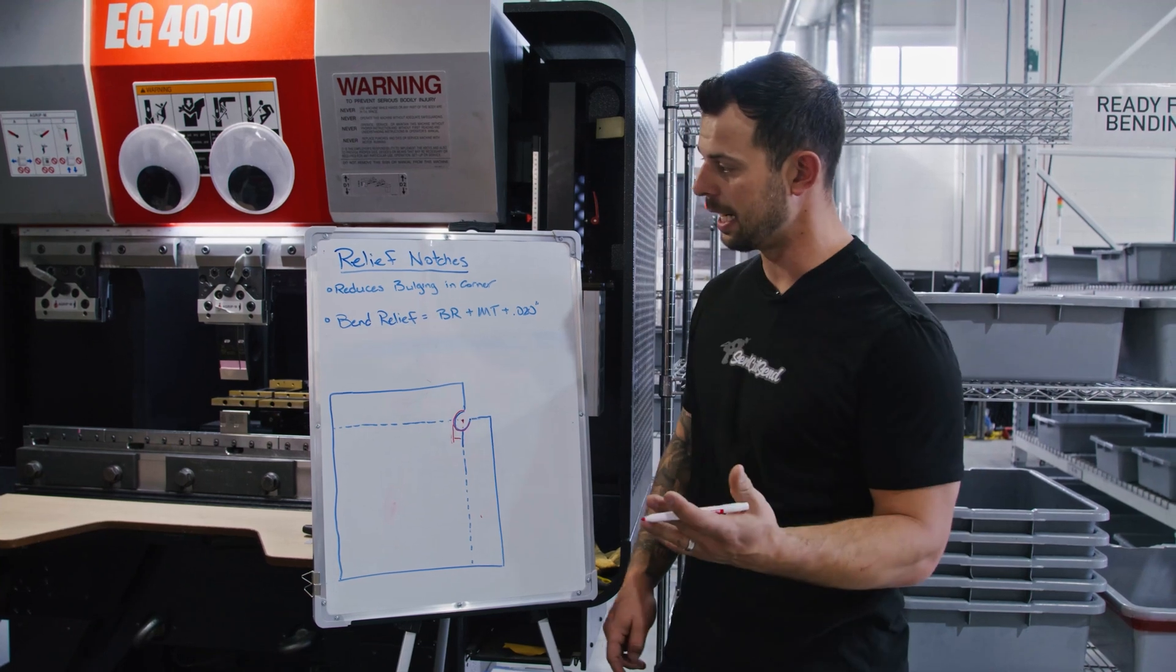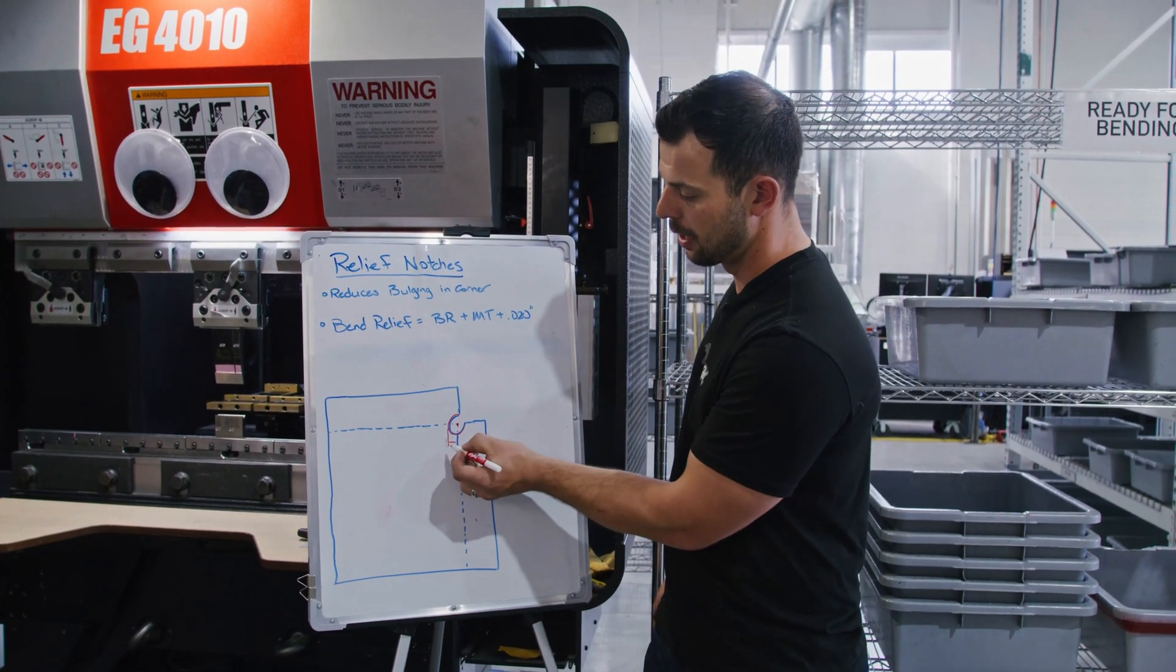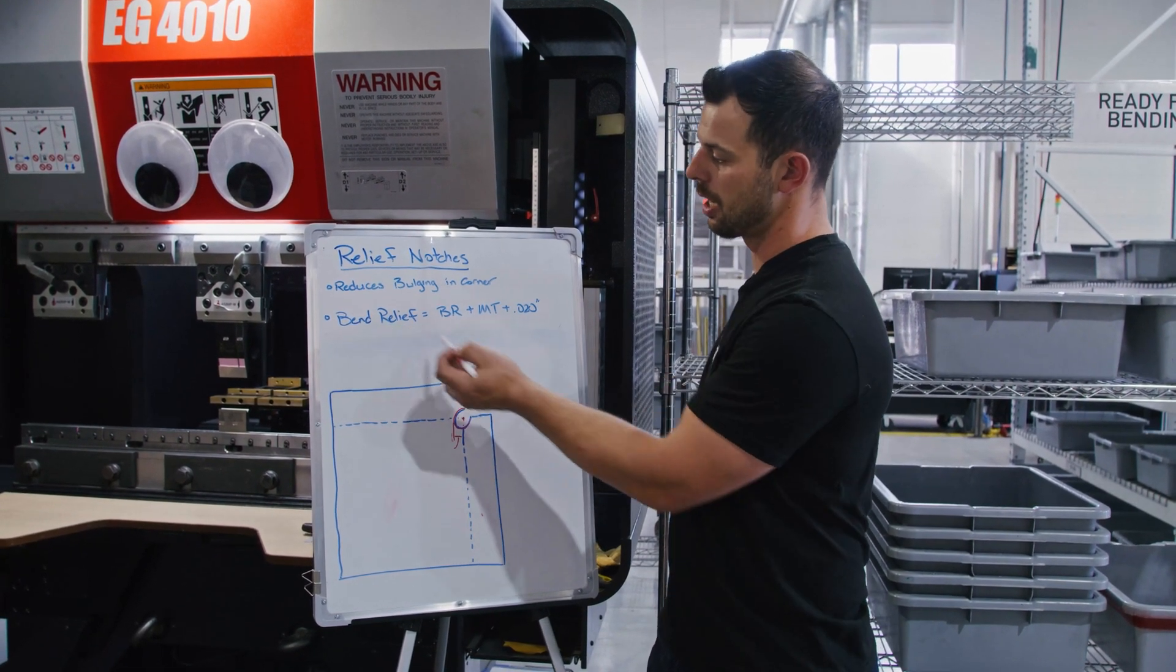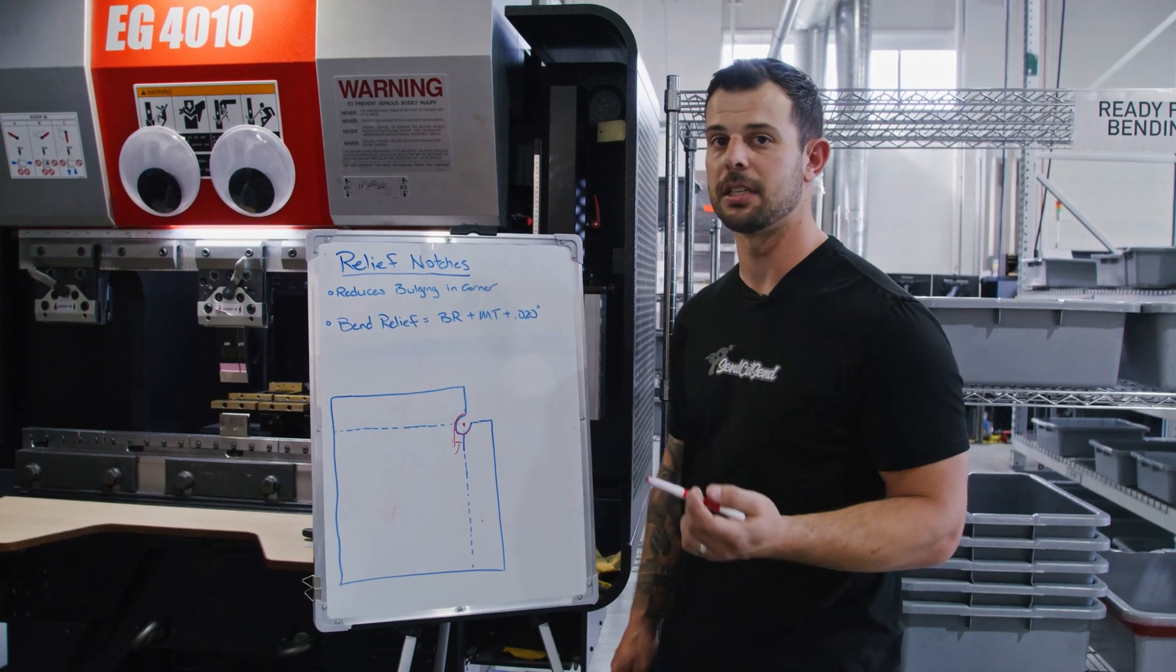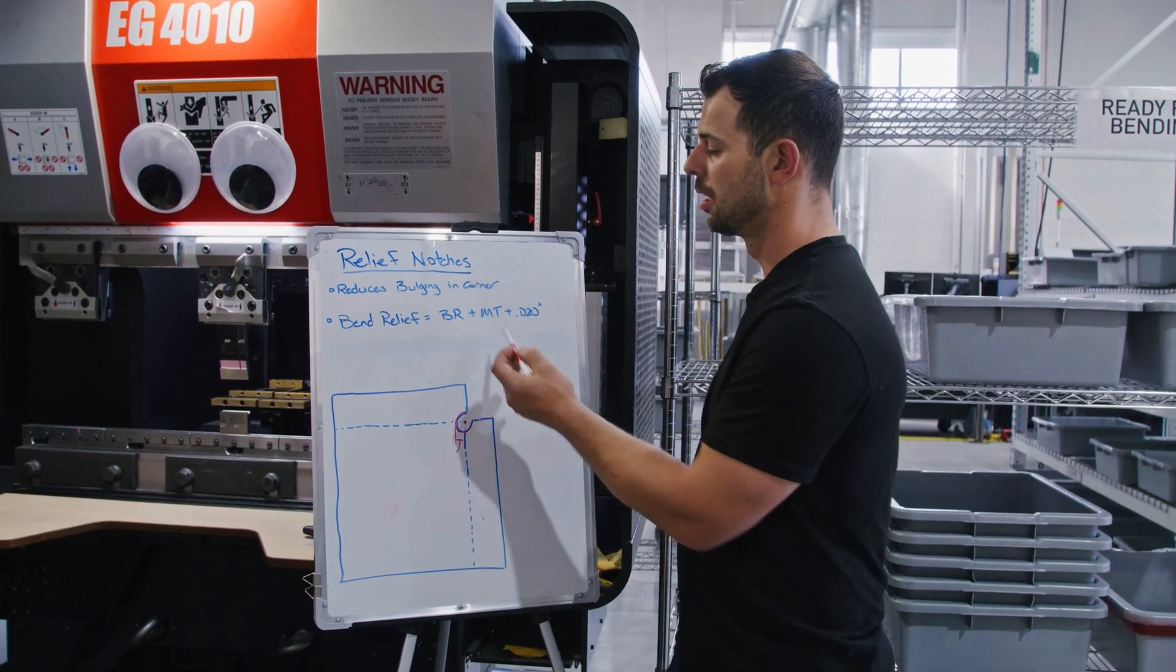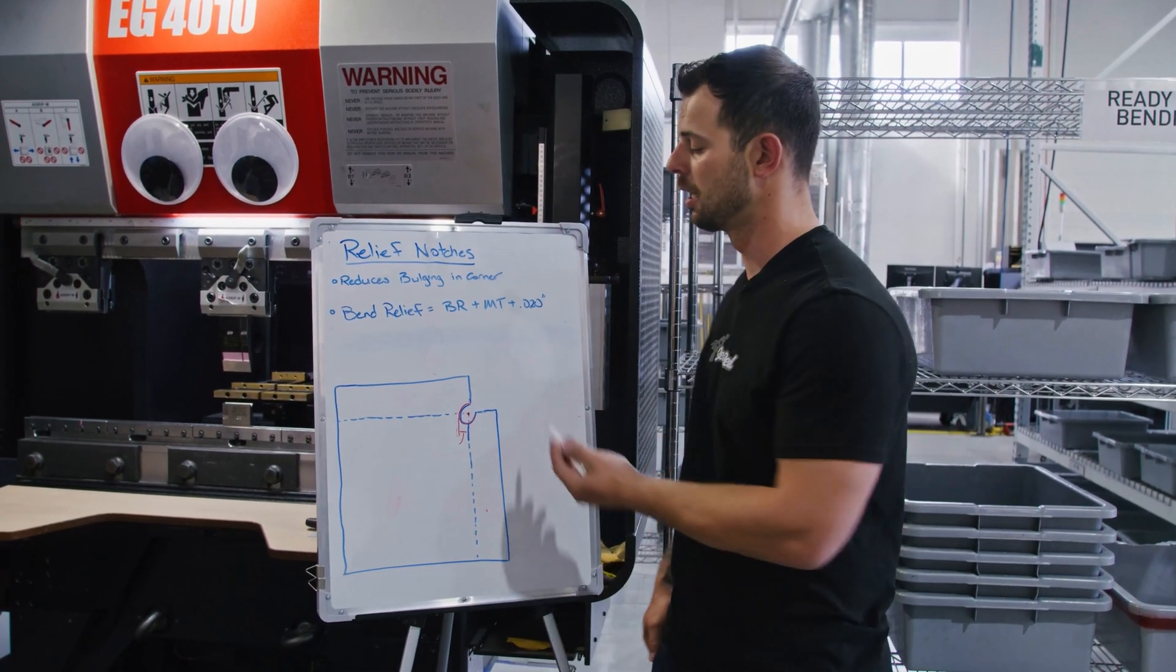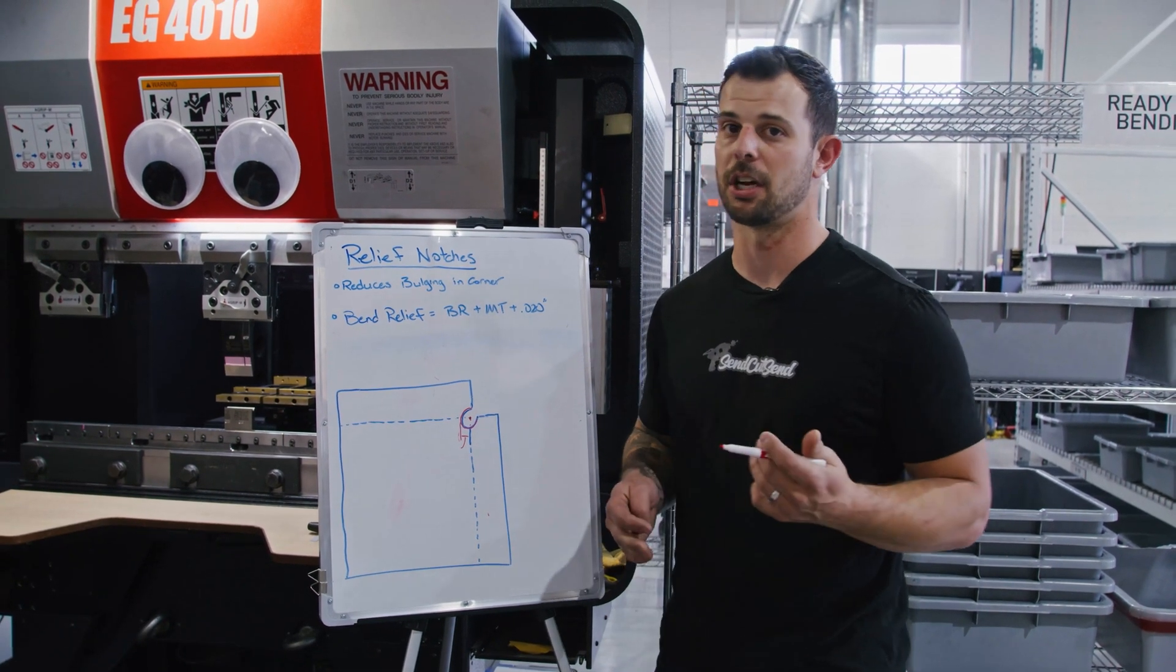And that circle's radius, or the bend relief, is going to end up being this equation right here. We're going to take the bend radius, which you can find on the bend calculator, the material thickness that you're using, and then add about 20 thousandths is our personal preference.